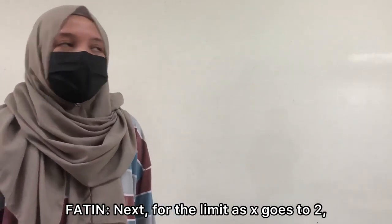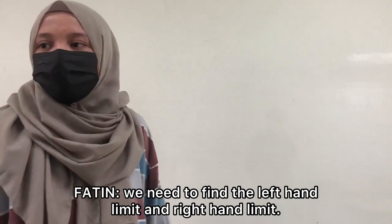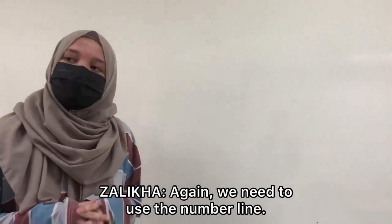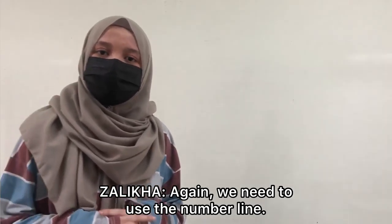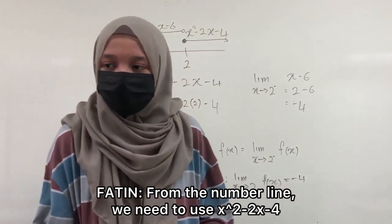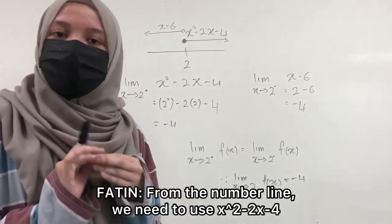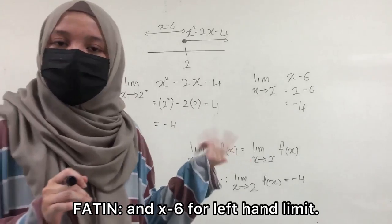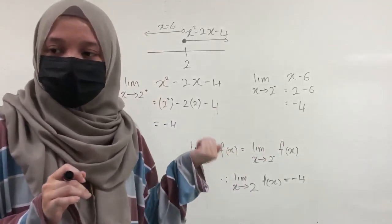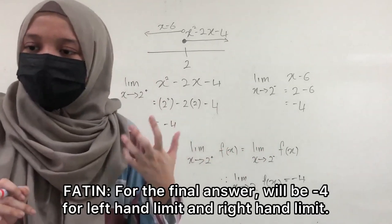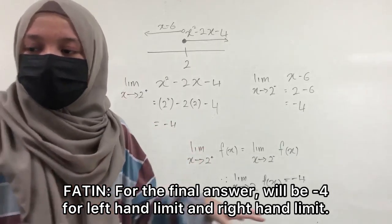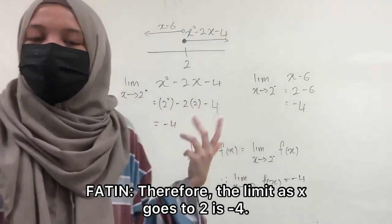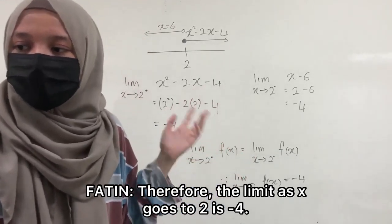Next, for the limit as x goes to 2, we need to find the left-hand limit and right-hand limit. What is the first step? Again, we need to use the number line. From the number line, we need to use x squared minus 2x minus 4 for the right-hand limit and x minus 6 for the left-hand limit. For the final answer, it will be negative 4 for left-hand limit and right-hand limit. Therefore, the limit as x goes to 2 is negative 4.